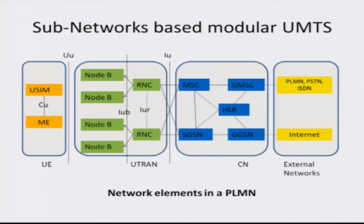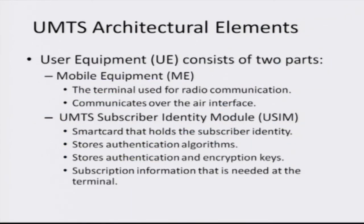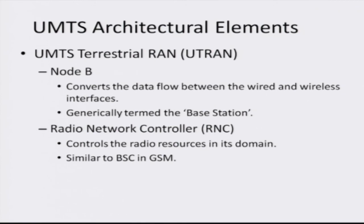The user equipment consists of the SIM — similar to GSM — and the mobile equipment. The base station is known as the Node B, and the base station controller is also known as the RNC or radio network controller. These are connected to the core network, which consists of various gateways that can interface with GSM-based cellular networks, other carriers, the landline network, and the internet. The subscriber identity module stores the authentication algorithms, encryption keys, subscription information, service information, and identity. The radio network controller manages the Node Bs, controls handover, and manages frequency resources.